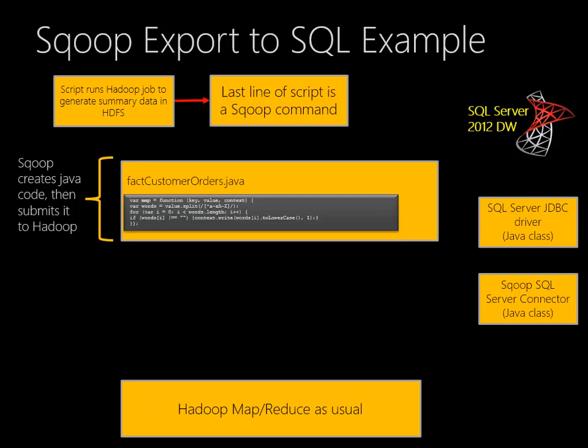We send Sqoop a command like: copy some summary data, put it up in SQL Server. MapReduce doesn't understand that directly, so Sqoop has to generate a Java program to create the data that Sqoop's looking for, and it submits that under the covers. That program is completely invisible to the end user — Sqoop is generating it automatically.